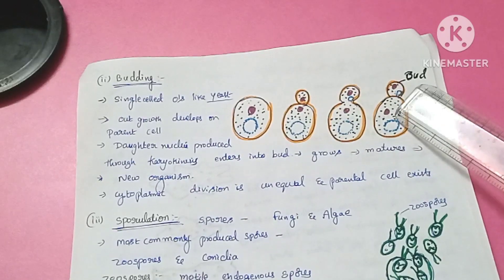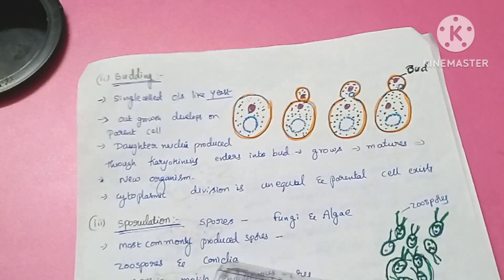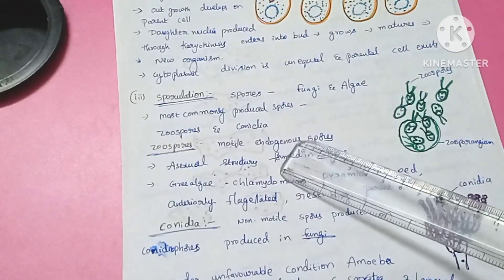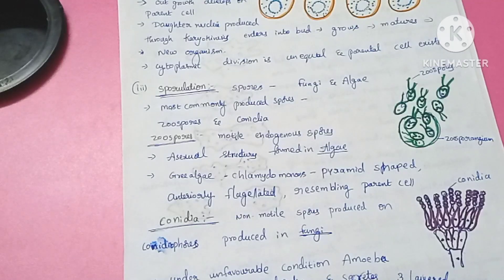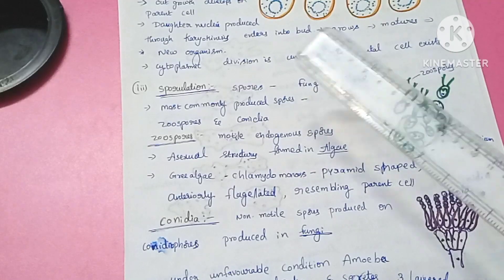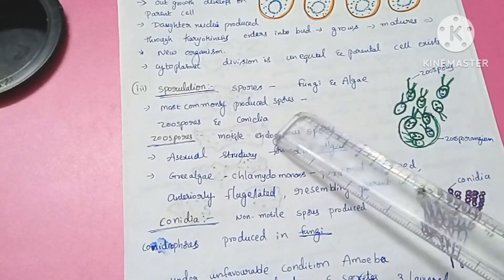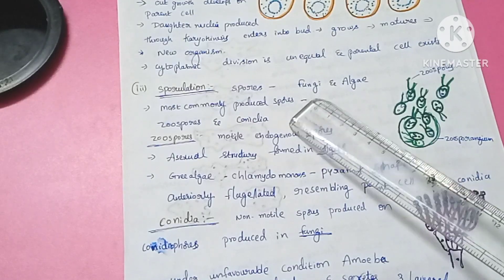The next topic is sporulation. The formation of spores is called sporulation. Sporulation is also a form of asexual reproduction. It occurs through the formation of specialized reproductive structures called spores.